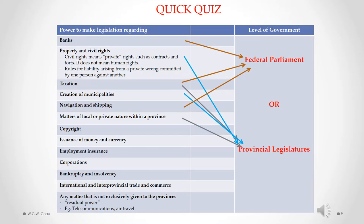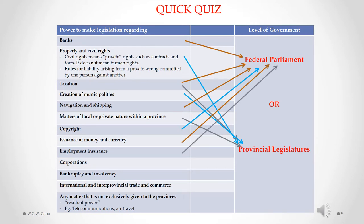Copyright and other intellectual property matters such as patent belong to the federal parliament. Copyright is regulated by a statute called the Copyright Act, under section 91.23. The issuance of money and currency belongs to the federal parliament — money is issued by the Royal Canadian Mint, which is owned and operated by the federal government, under section 91.14. Employment insurance is under the jurisdiction of the federal government under section 91.2A. Section 91.2A says unemployment insurance, which was the original name — it was under the government of Brian Mulroney when they changed the name from unemployment insurance to employment insurance.